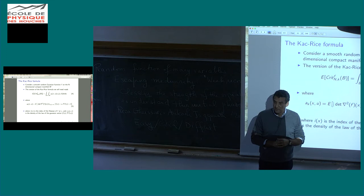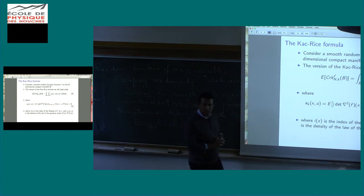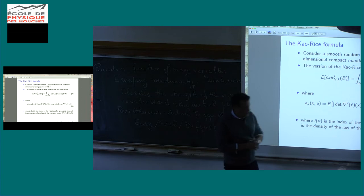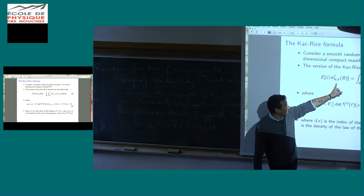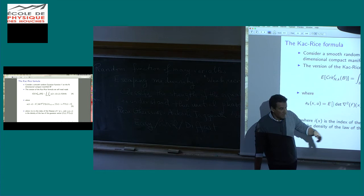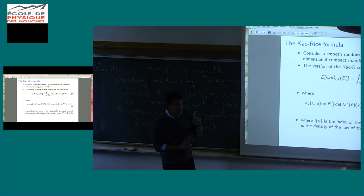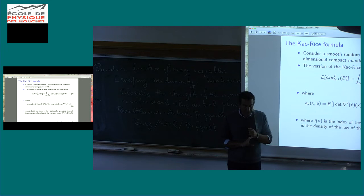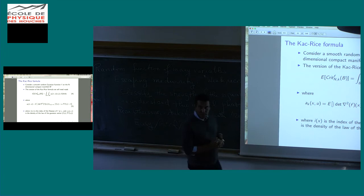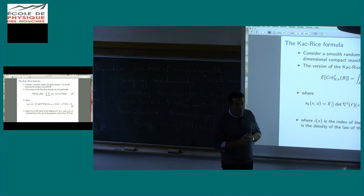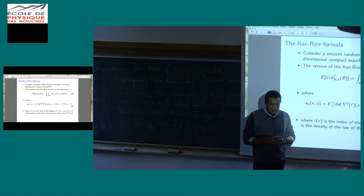A_K(x, u) is the expectation of the absolute value of the determinant of the Hessian at x, times the indicator that the index I(x) equals K, conditioned by the value of F being u and the point being critical — that is, gradient zero. You integrate phi_{x}(u, 0), the density of the law of the Gaussian vector (F(x), gradient of F), evaluated at (u, 0). This formula is valid under assumptions — in particular, F needs to be smooth, Gaussian, and have non-degenerate Hessians at critical points, which ensures that almost surely F is a Morse function.